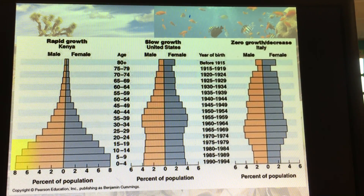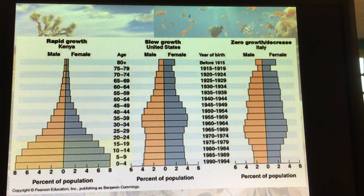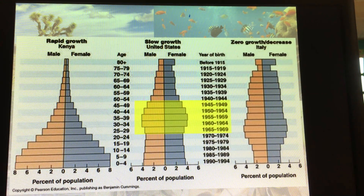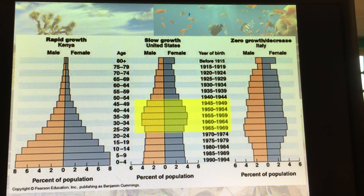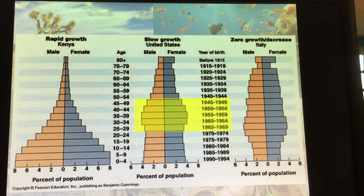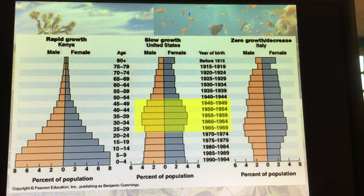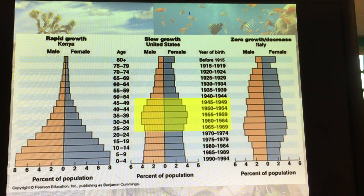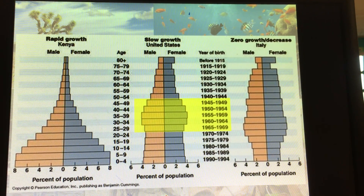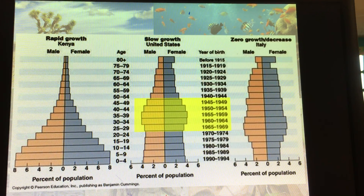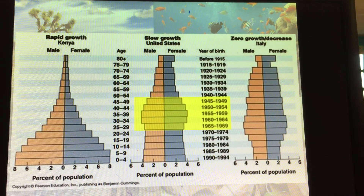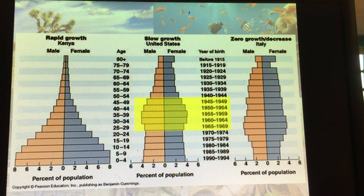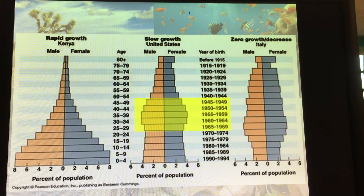One interesting thing you may notice in the US life table are large sections of population in the middle. After World War II, these are the baby boomers — children born following the war, showing an increase in population size. As this generation begins to age, the question becomes: how are we going to support a really large aging population? Right now in political debates, this is why social security is such a big issue. If you were born in 1945, at the beginning of the baby boom, you're soon going to start to retire — and that's where this all comes into play.